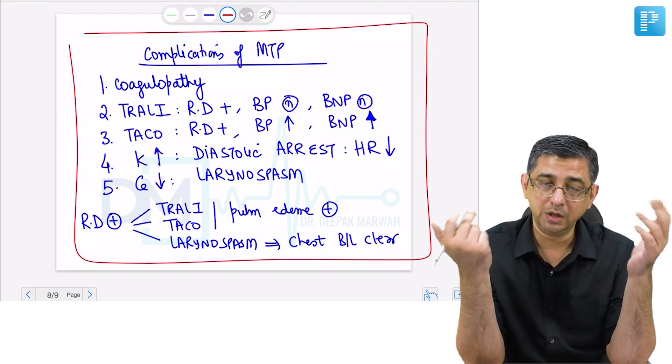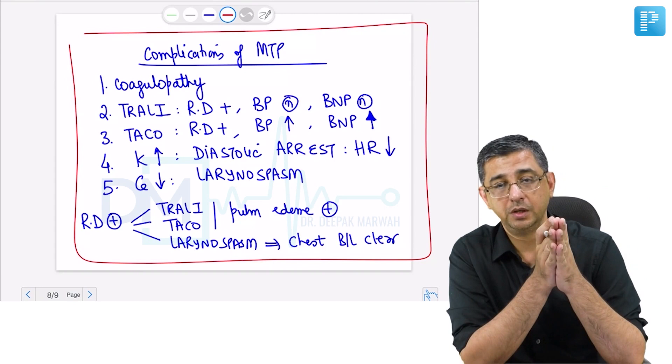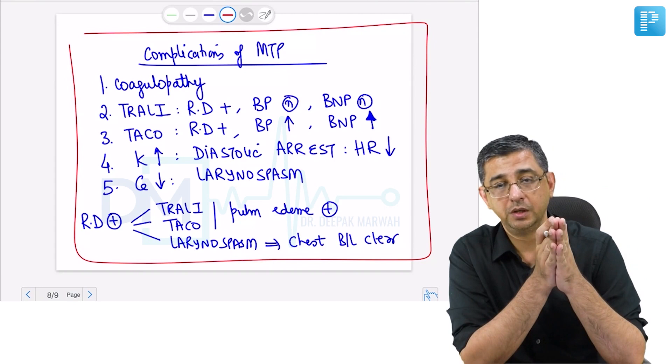It would be either TRALI, TACO, or laryngospasm if the chest is clear. We have to keep our senses open to the fact that these permutation combinations could be occurring in the patient. These are details I wanted you to remember for this topic. Thank you so much for listening, and we'll continue with another topic.